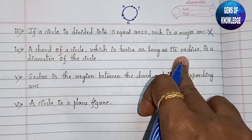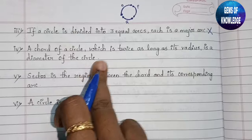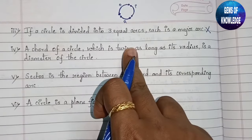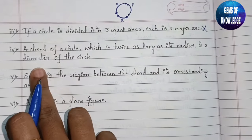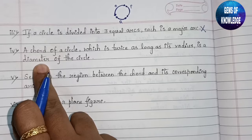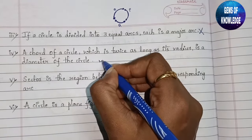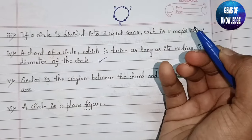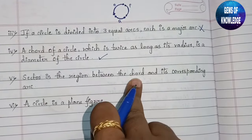Next: a chord of a circle which is twice as long as its radius is the diameter of the circle. Two times the radius is indeed the diameter, so this statement is true.